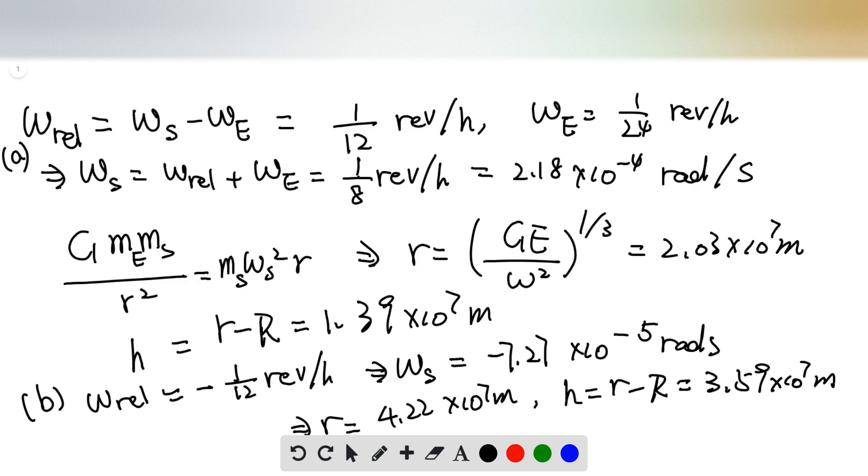We know that the angular speed of the Earth is 1 over 24 revolution per hour, because 24 hours equals 1 revolution. Hence, we can get that the angular speed of the satellite is 1 over 8 revolution per hour.